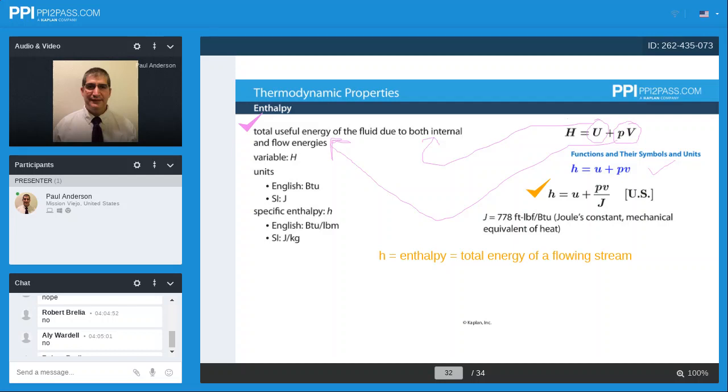is this conversion factor J. There's two really important conversion factors for thermodynamics and fluid mechanics. Probably the most important is G sub C. Probably the second most important is this J conversion factor.